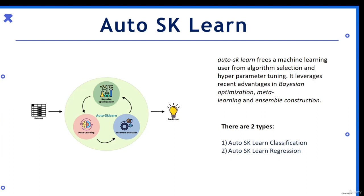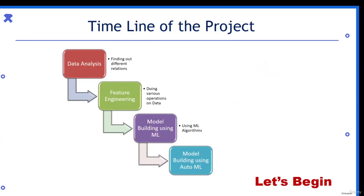What will be the timeline of our project? We will first do the data analysis part to analyze and understand our data and how it is related. Then we will shift to the feature engineering part. In this, we will do different operations like one-hot encoding, label encoding, standardization, and all the different data pre-processing techniques. We will also be selecting the best features.